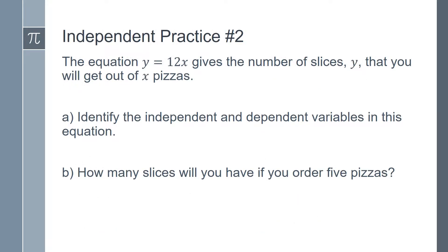So we know that 4, 31 is a solution to 6x equals y minus 7 because it makes the equation true. Independent practice number 2. The equation y equals 12x gives the number of slices y that you will get out of x pizzas. Part a, identify the independent and dependent variables in this equation. Part b, how many slices will you have if you order 5 pizzas? Now is a good time to pause this video and work on this problem if you have not done so already.